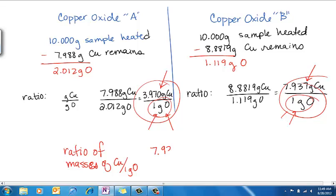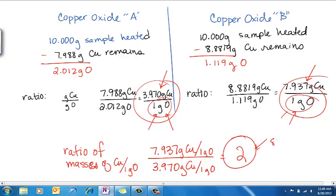I'm going to take that 7.937 grams of copper from copper oxide B, and divide it by that mass from copper oxide A. And these are both compared to 1 gram of oxygen. I get a small whole number, 2.